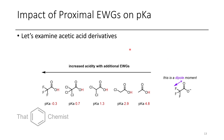If we have a carboxylic acid, we can really see the effect of electron-withdrawing groups on pKa. With acetic acid we have a pKa of 4.8. As soon as we add a chlorine we drop the pKa to 2.9. With two chlorines it drops even further to 1.3.